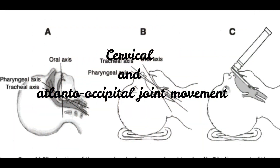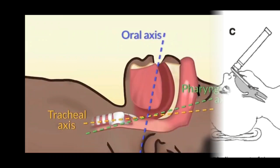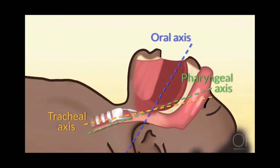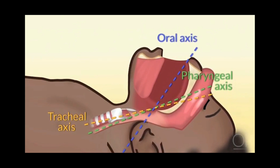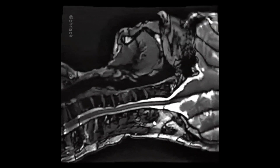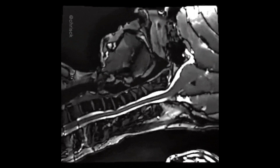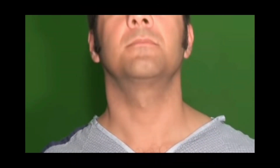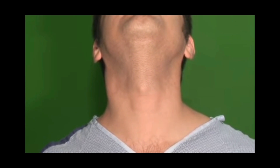Cervical and atlanto-occipital joint movements: To obtain the ideal sniffing position — that is, flexion at the cervical and extension at the atlanto-occipital joint — which helps align the oral, pharyngeal, and tracheal axis, neck movement should be normal. Flexion of around 25 to 35 degrees at the neck and extension of 80 to 85 degrees at the atlanto-occipital joint makes the laryngoscopic view easier.